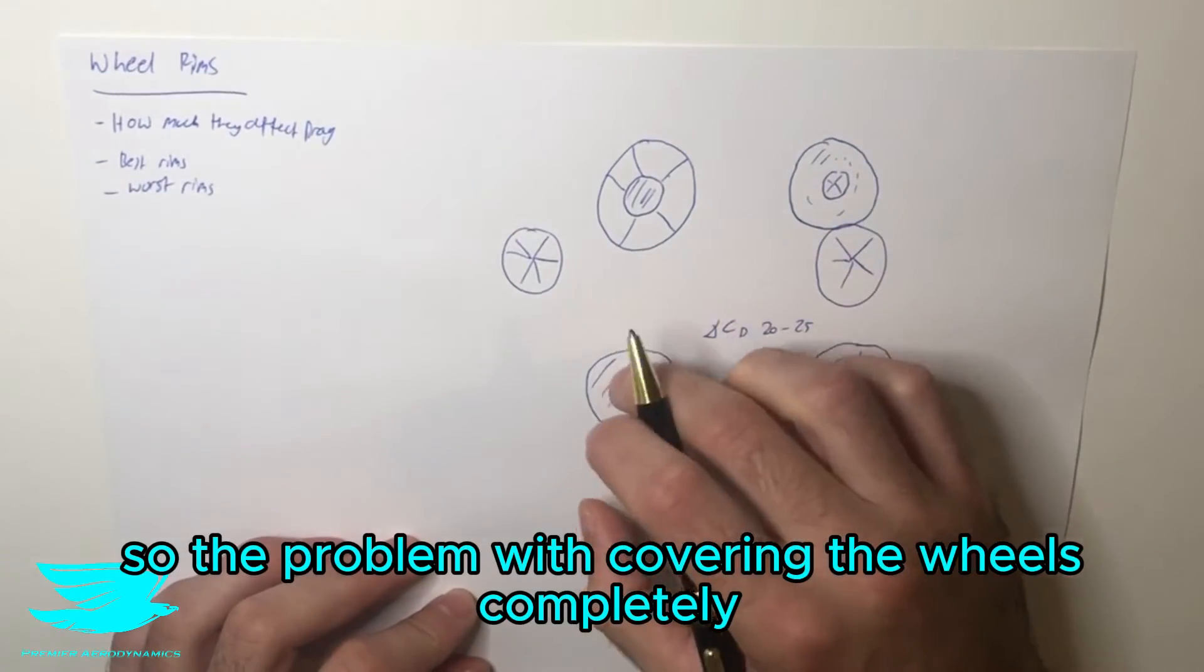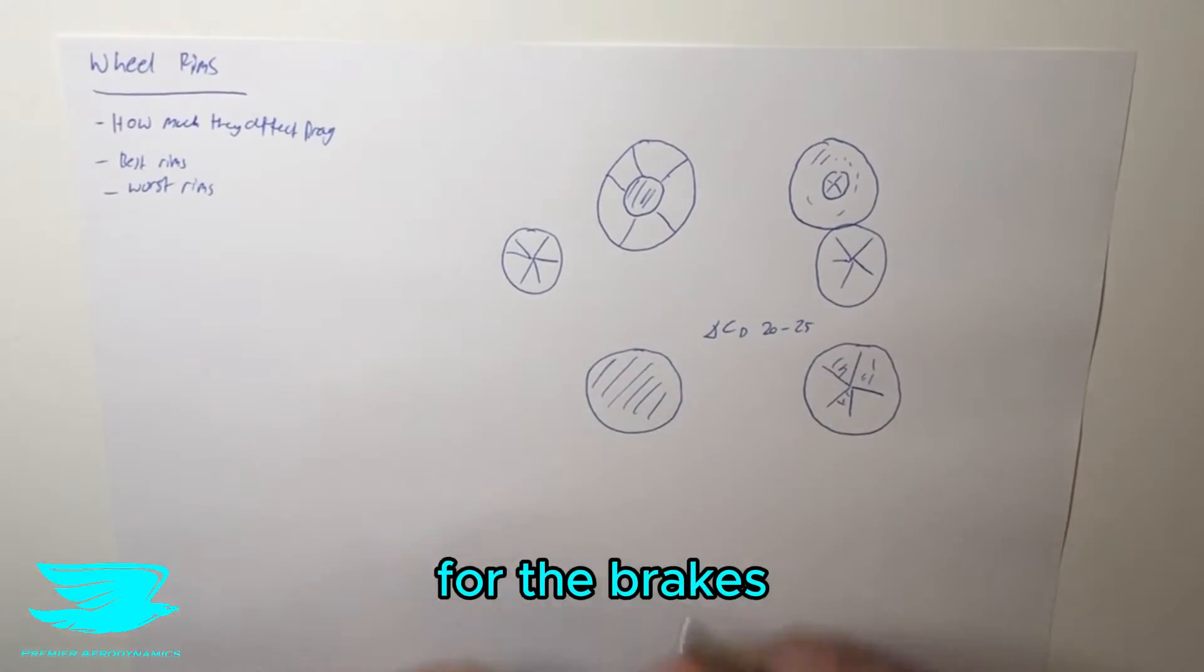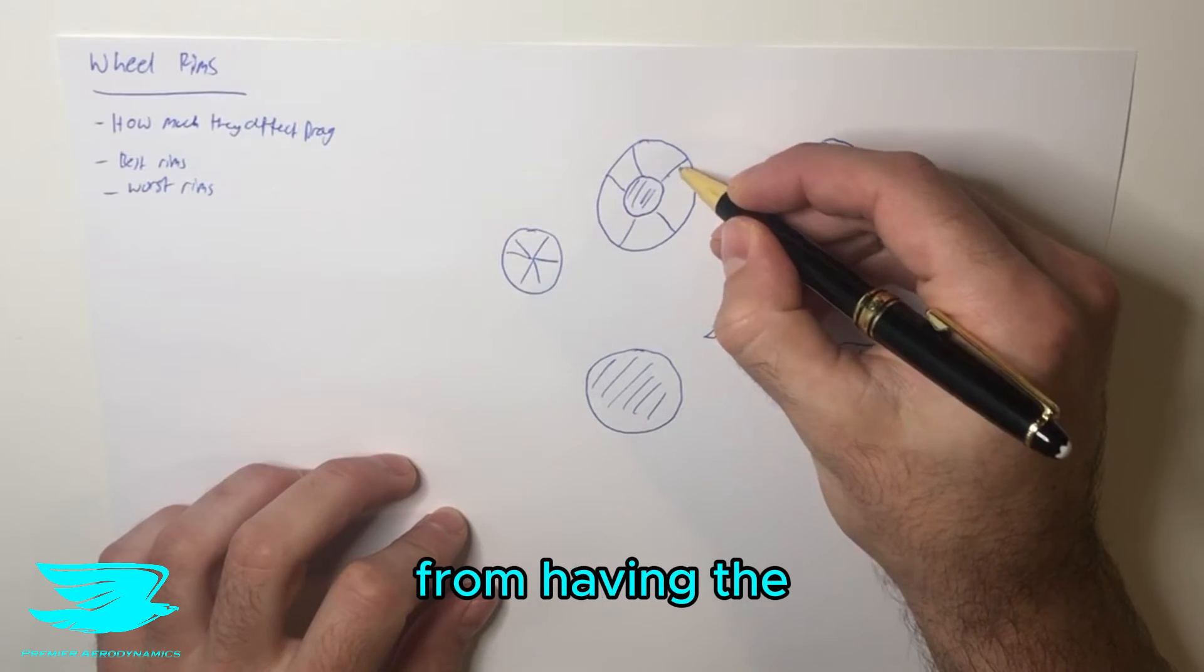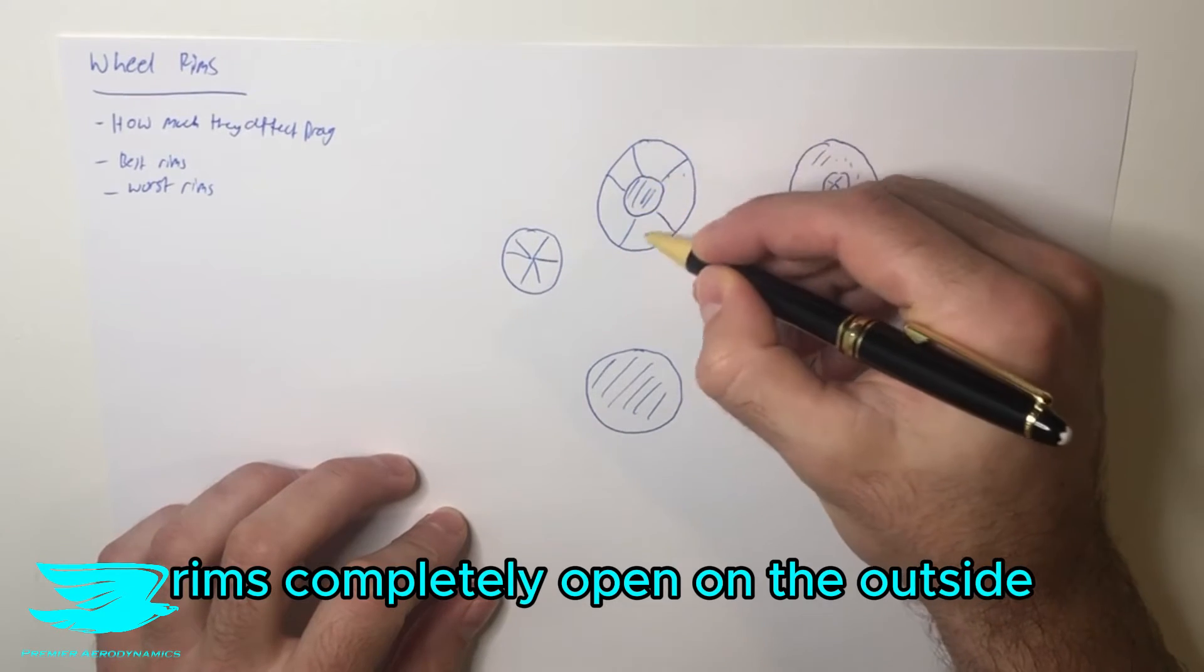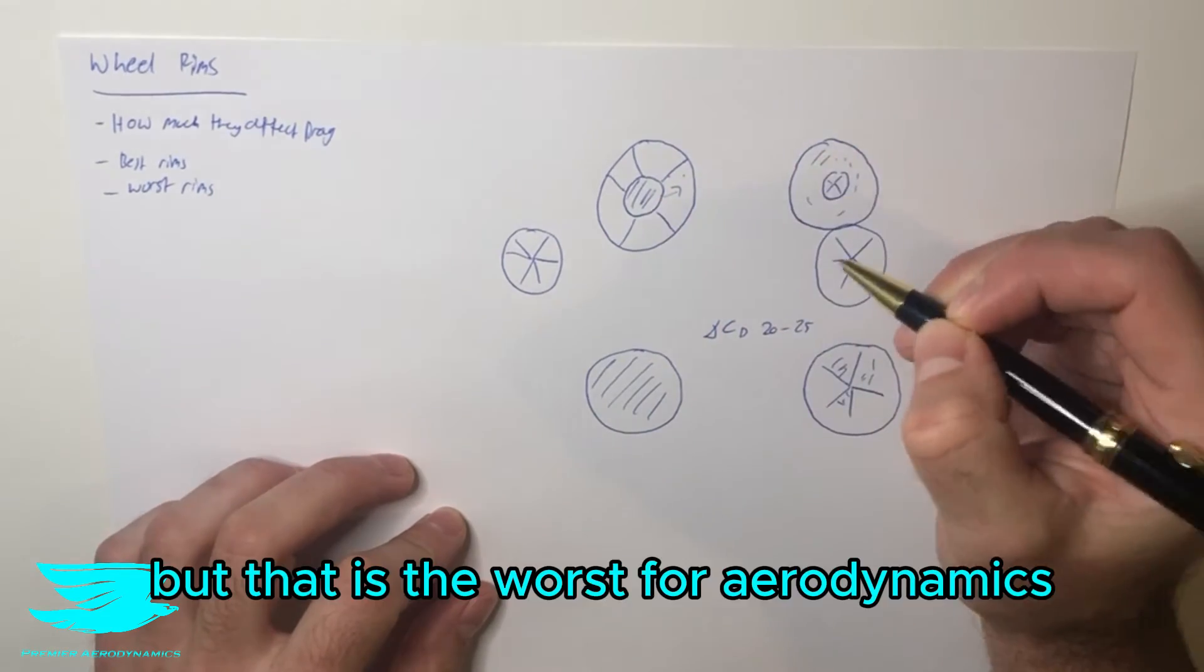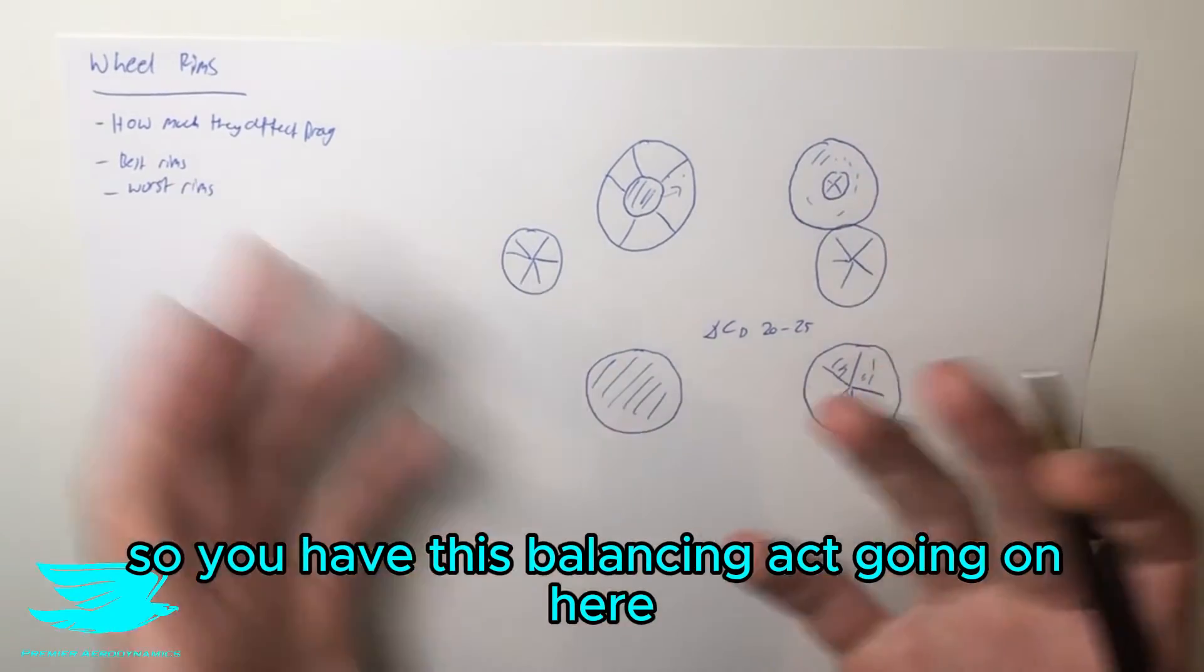So the problem with covering the wheels completely is you need to have some amount of cooling flow for the brakes. So ideally, the brakes benefit the most from having the rims completely open on the outside. That's where you get the most cooling flow from, but that is the worst for aerodynamics, because you want to cover the outside. So you have this balancing act going on here.